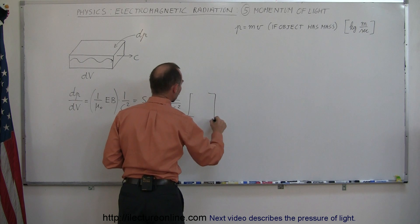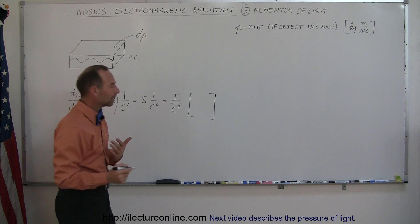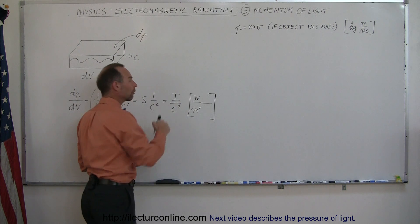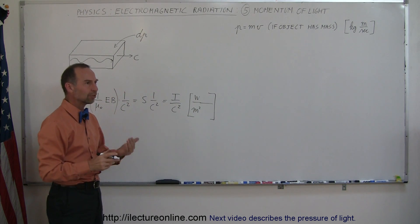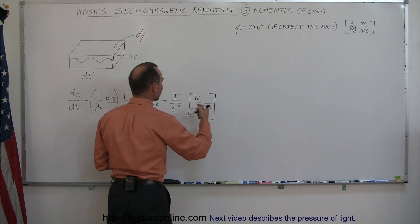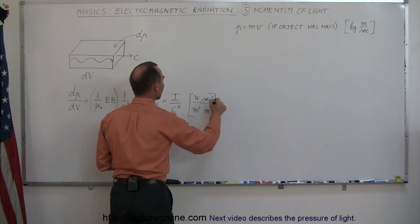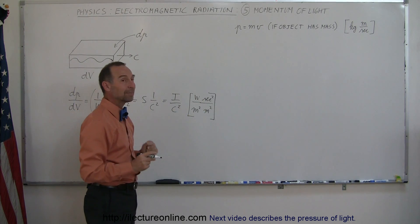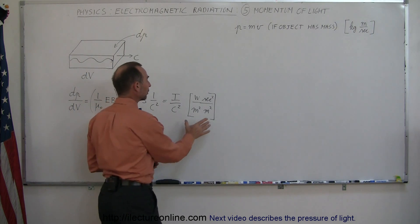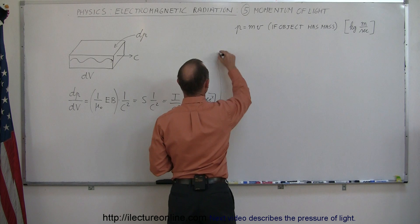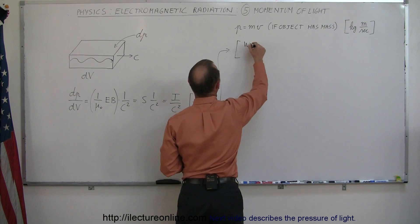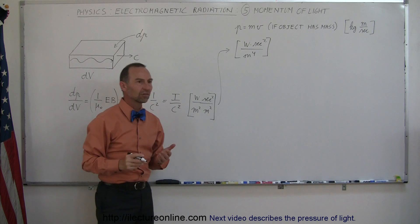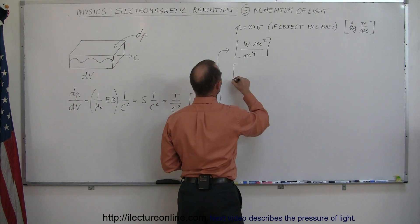The units of intensity are watts per square meter — that's power over area. We then multiply by one over c squared, where c is the speed of light in meters per second, giving meters squared in the denominator per second squared in the numerator. So the units of dp/dV, if equal to I/c², work out to watts times seconds squared divided by meters to the fourth power. Let's see how we can relate this back. Starting with watts times seconds squared divided by meters to the fourth power...